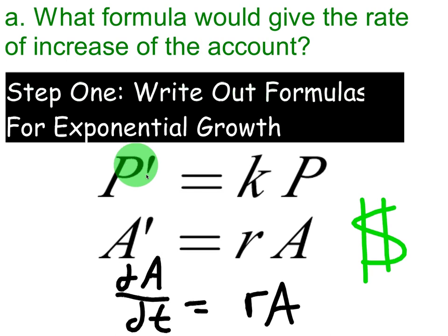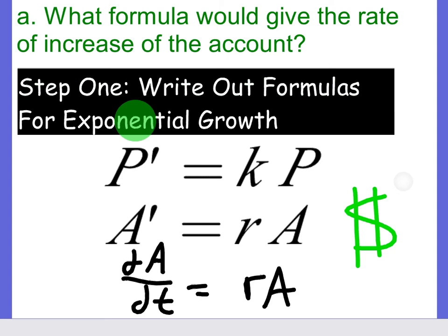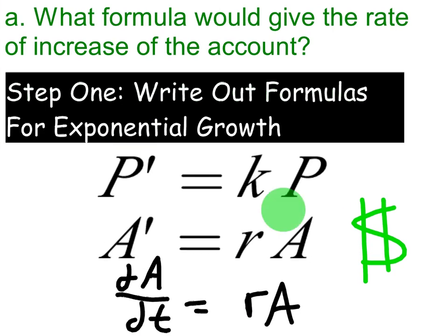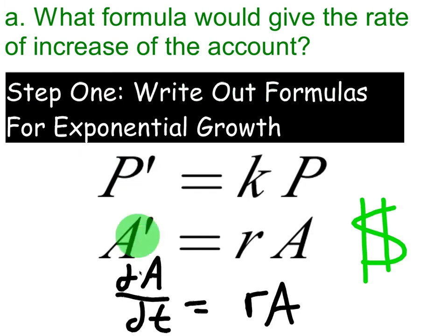Using the differential formula: the change in population is equal to the growth constant times the population, but since we're talking about money, we use A prime, which represents the rate at which the amount in the account is changing, equal to the interest rate times the amount in the account. We're choosing this second formula — not A equals P-naught times e to the rt — since the question asks about the rate of increase. We can write this as dA/dt equals rA.